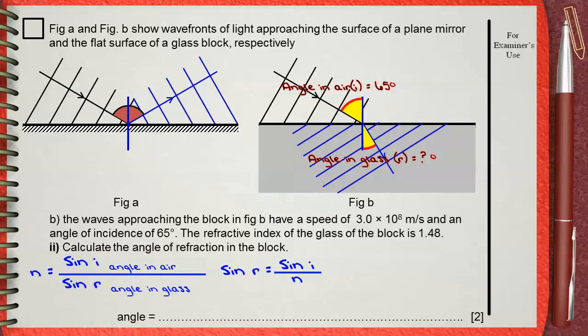The angle in air according to the question is 65 degrees. So, sine 65 divided by the refractive index, which is 1.48, equals 0.61.